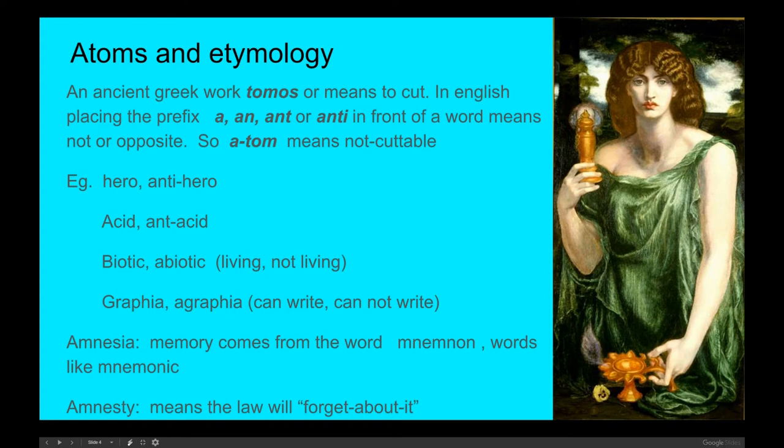When we get to ecology, biotic is living, abiotic is not. Graphia means you write. Agraphia is a person who cannot write. Amnesia, memory comes from the word memnon, in words like mnemonic. And amnesia means you have no memory. An amnesty, meaning the law will forget about you. You did something bad and we'll forget about it. So not remembering. Atom means not cuttable.